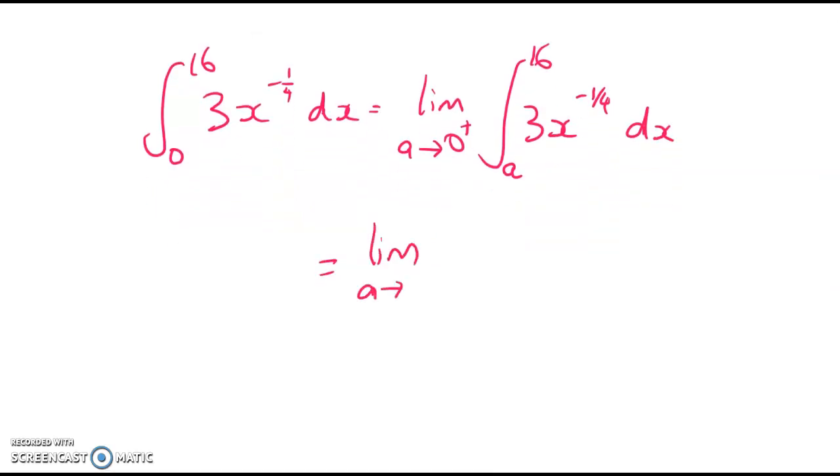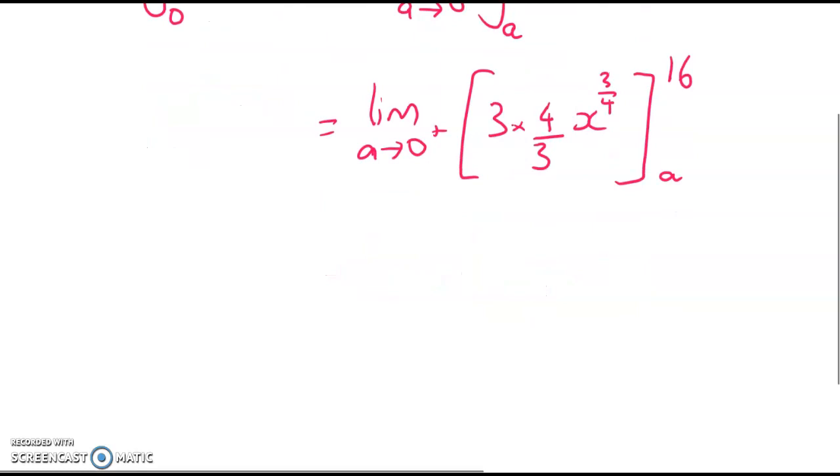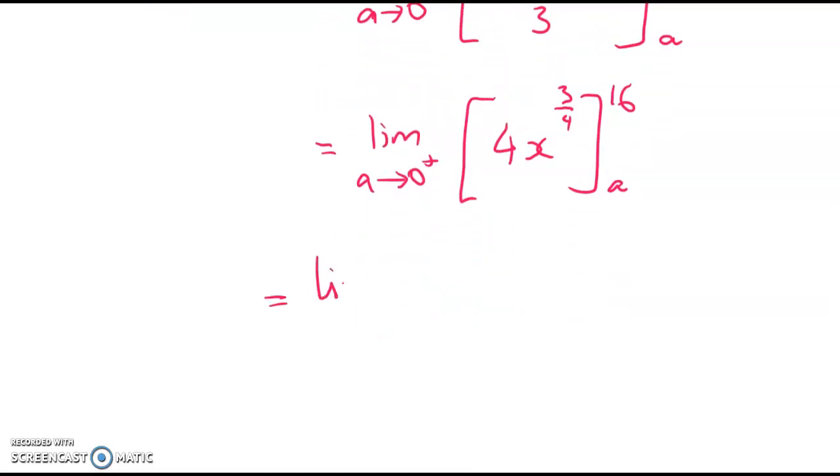So integrating this and leaving the limit alone for now gives me 3 times, so I'm going to have x going up a power to 3 quarters. So I need to undo that when I differentiate it back. So we times by the reciprocal. And to those of you who are not doing all that working that's fine as long as you're not making mistakes with it. So here we've got 4x to the power of 3 quarters which is going to be nice and easy to work out. So we're still not doing the limit until we've done all of those steps first. So 4 times well what's the x to the power of 3 quarters when x is 16? Well the 4th root of 16 is 2 so it's times 2 cubed which is 8. So 4 times 8 minus 4a to the 3 over 4.